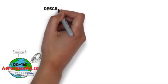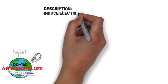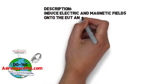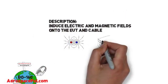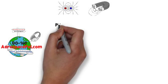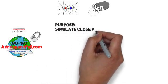The whole point of this test is to induce E-fields and magnetic fields onto your EUT and interconnecting cable. These tests simulate the often close routing of interconnecting cables on the aircraft.